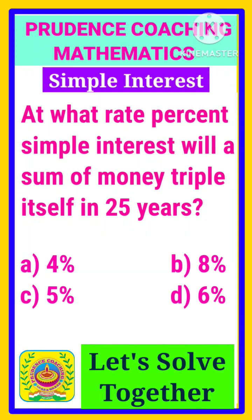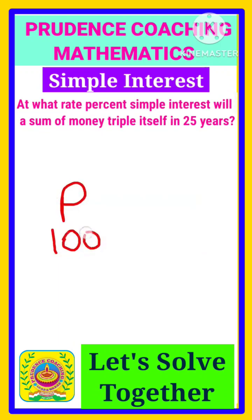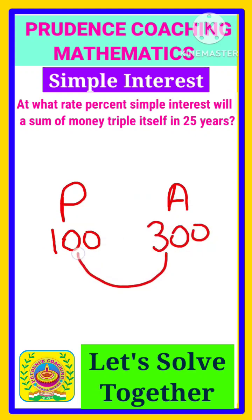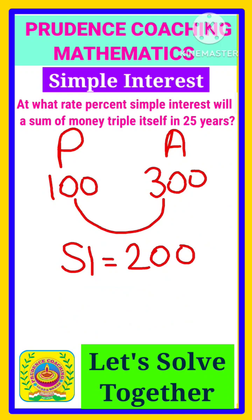At what rate of simple interest will a sum of money triple itself in 25 years? If the principal is 100 rupees, it will become three times itself, so the amount will be 300 rupees. We know amount minus principal is simple interest, so 300 minus 100 gives us 200 rupees as the simple interest.